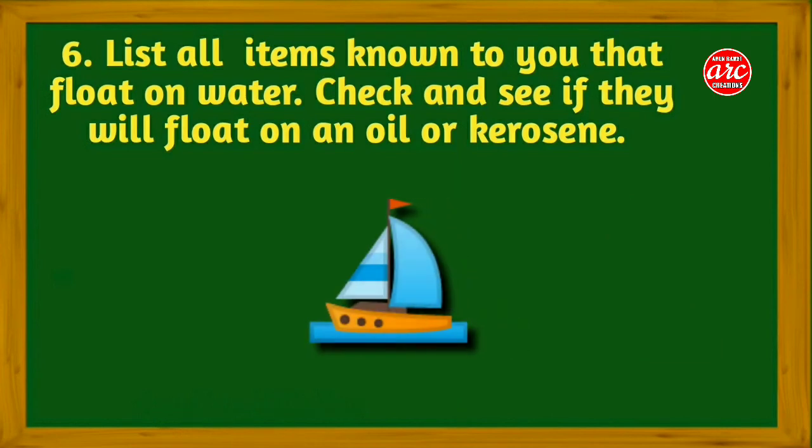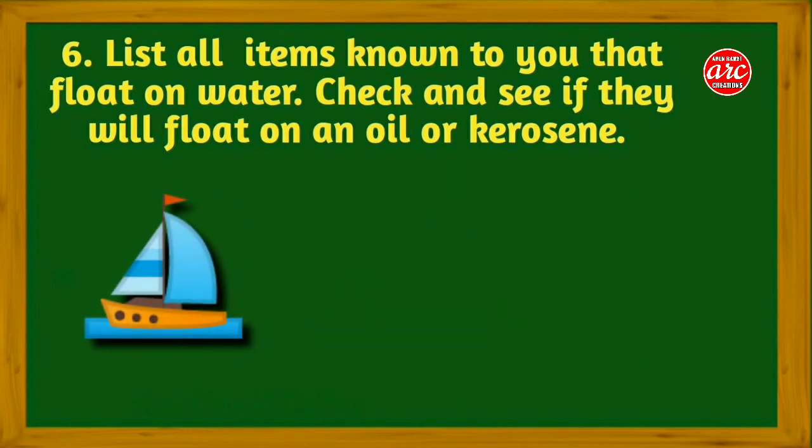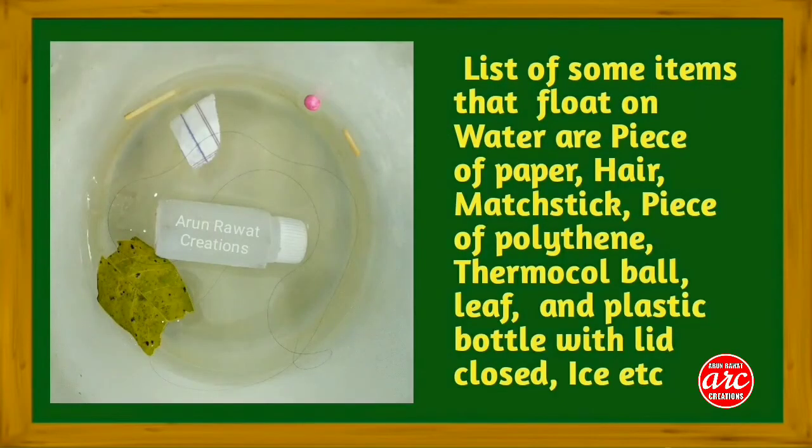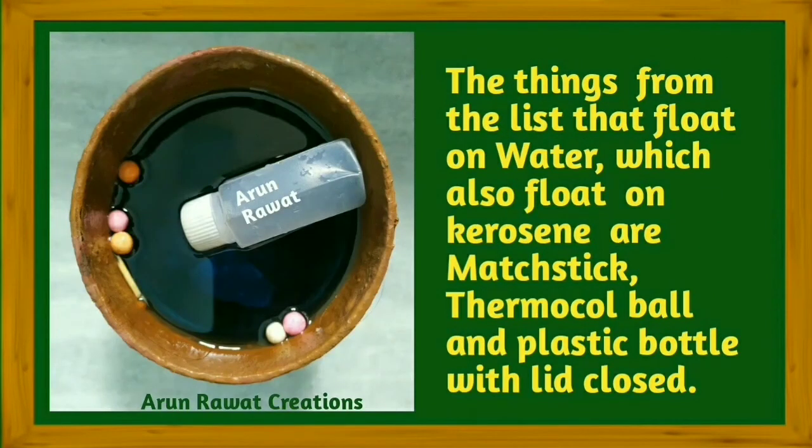Question number six: List all items known to you that float on water. Check and see if they will float on an oil or kerosene. Answer: List of some items that float on water are piece of paper, hair, matchstick, piece of polythene, thermocol ball, leaf, plastic bottle with lid closed, ice, etc. The things from the list that float on water which also float on kerosene are matchstick, thermocol ball, and plastic bottle with lid closed.